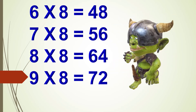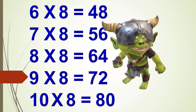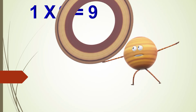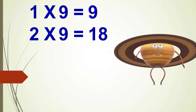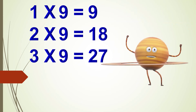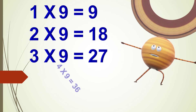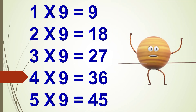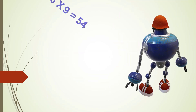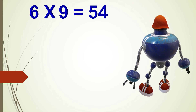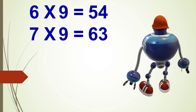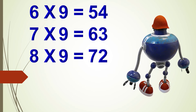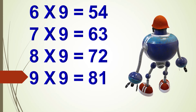One times nine is nine, two times nine are eighteen, three times nine are twenty-seven, four times nine are thirty-six, five times nine are forty-five, six times nine are fifty-four, seven times nine are sixty-three, eight times nine are seventy-two, nine times nine are eighty-one.